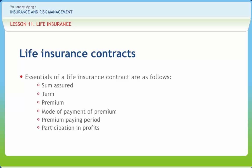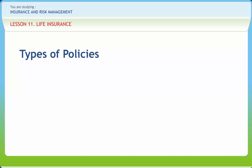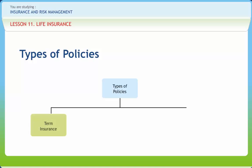Financial planning can be done for long term or short term depending upon the need to cover the entire life or part thereof of an individual. Any person who has attained majority and is not found ineligible to enter into a valid contract can take out a life insurance policy for himself and on those in whom he has insurable interest. Life insurers offer various forms of term plans and traditional life policies as well as interest sensitive products which have become more prevalent since the mid-1980s. Term insurance provides protection for a specified period of time. This period could be as short as one year or provide coverage for a specific number of years such as 5, 10 and 20 years, or to a specified age as high as 80. Policies are sold with various premium guarantees.